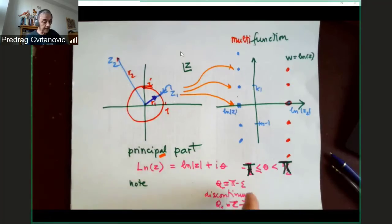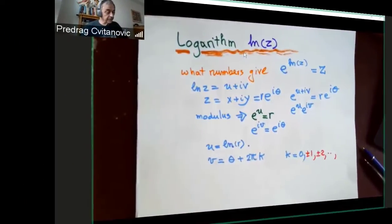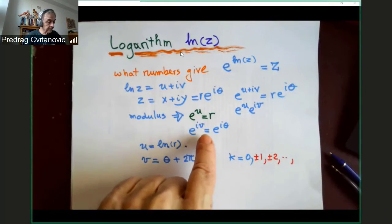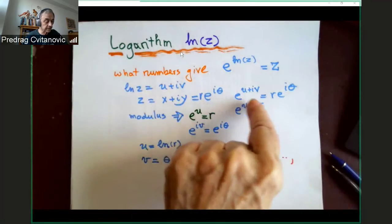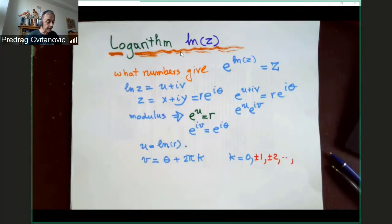Now, the big surprise is that when I go to imaginary axis, I have to satisfy the relation that exponent of this function v, which is the logarithm, is exponential equals exponential of theta.